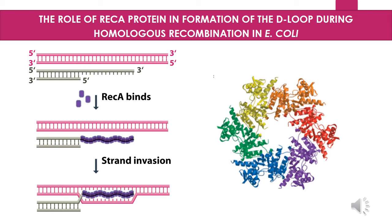In eukaryotic cells, there are different RecA homologues like RadA in archaea, DMC1 and RAD51 in eukaryotes, and UvsX in bacteriophages. So here we see how strand invasion occurs by the help of RecA proteins. Now let us move to the final step of homologous recombination.